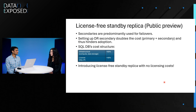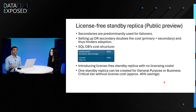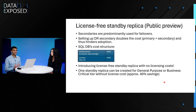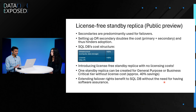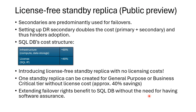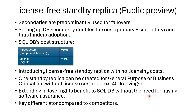That's about 40% savings that customers get. As part of this public preview, customers can create one standby replica in General Purpose and Business Critical, which is a significant portion of our deployments, and get this 40% discount because they don't have to pay for the license. We are extending this failover rights benefit from SQL Server on-premises — we did it for VMs, we did it for Managed Instance, and now we are doing it for SQL DB as well. This is a key differentiator compared to competitors, because we control the license component and have decided to remove it and extend the failover rights benefit.